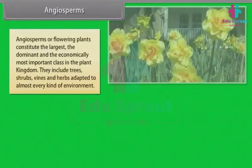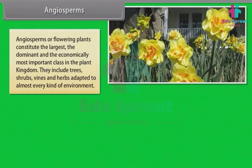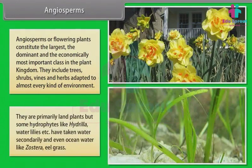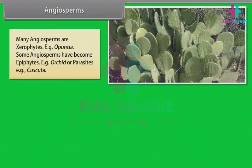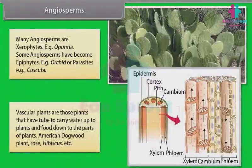Angiosperms, or flowering plants, constitute the largest, dominant, and economically most important class in the plant kingdom. They include trees, shrubs, vines, and herbs adapted to almost every kind of environment. They are primarily land plants, but some hydrophytes like Hydrilla, water lilies, etc. have taken to water secondarily, and even ocean water, like Zostera (eel grass). Many angiosperms are xerophytes, for example Opuntia. Some angiosperms have become epiphytes, for example orchids, or parasites, for example Cuscuta. Vascular plants are those that have tubes to carry water up and food down to parts of the plant — American Dogwood, Rose, Hibiscus, etc.